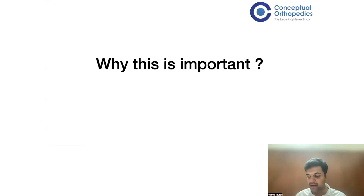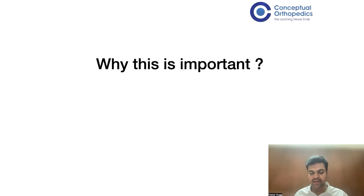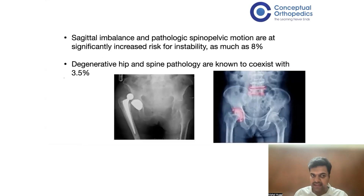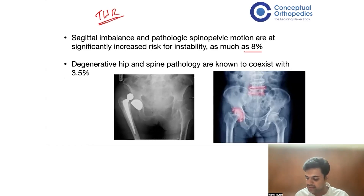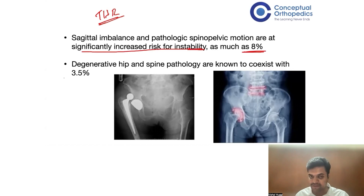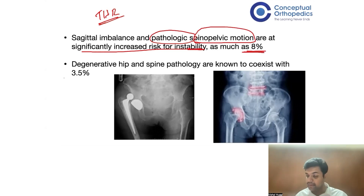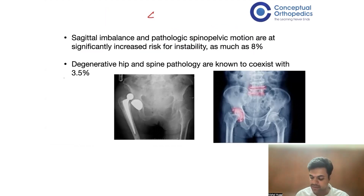Without further delay, let us understand why this topic is so important and why it suddenly came into vogue. It all started around 2015–2016. The risk of THR dislocation with pathological spinopelvic motion is as high as 8%, with significantly increased instability. In contrast, the dislocation rate for a normal THR without spinopelvic pathology is only about 0.3 to 0.5%.